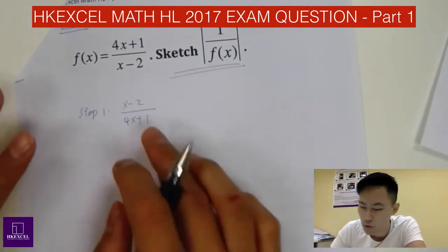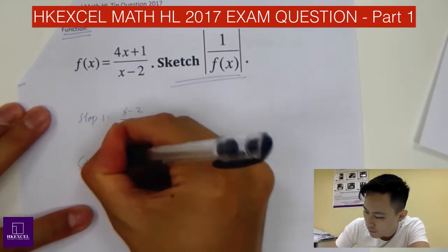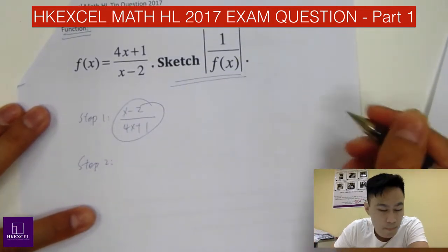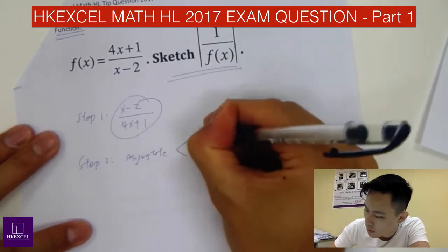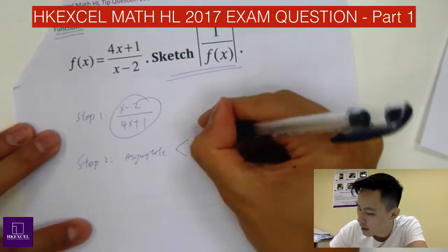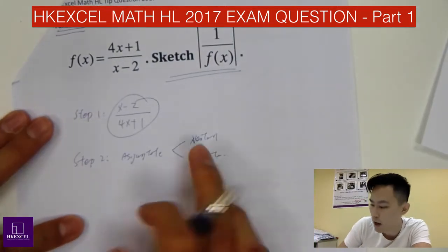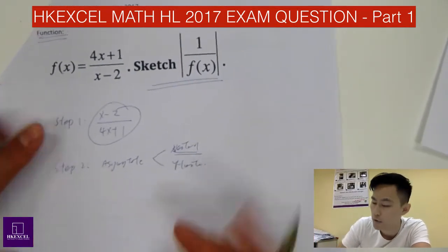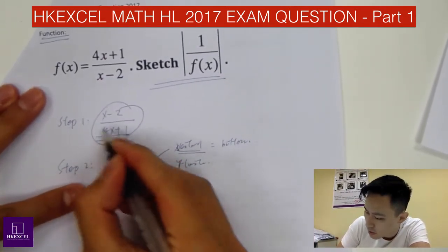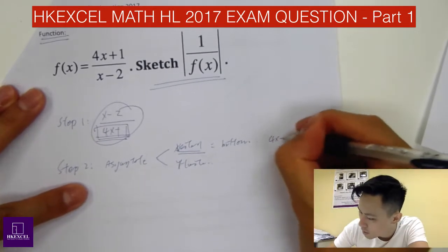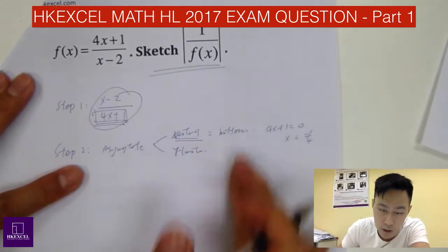Step 2: don't apply the absolute sign yet — draw the graph of this flipped function first. To draw the graph, find the asymptotes. For the vertical asymptote, set the denominator equal to 0: 4x + 1 = 0, so x = -1/4.